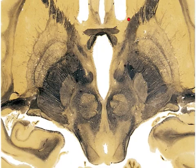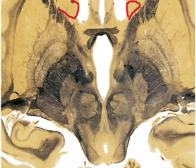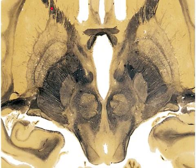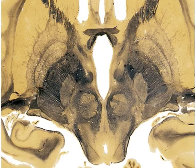Up here we have the caudate nucleus — you can see just a little bit of it. And then we have the lateral ventricles right here. And then we have the internal capsules right here.